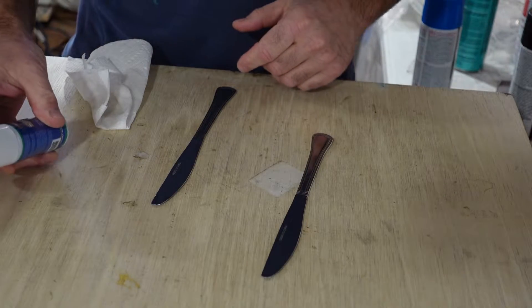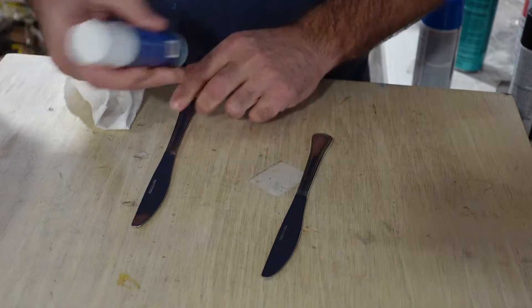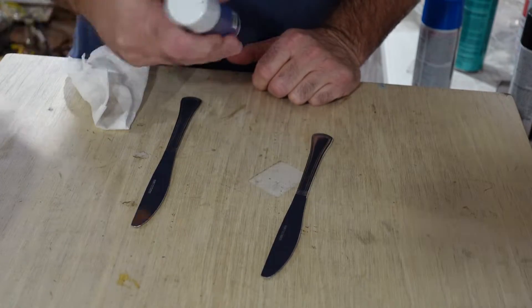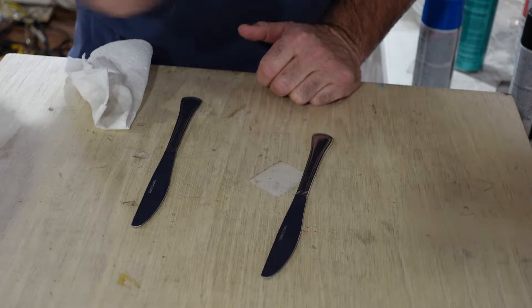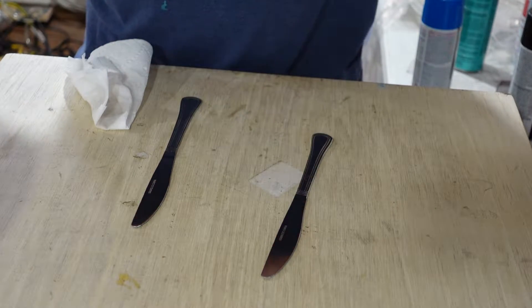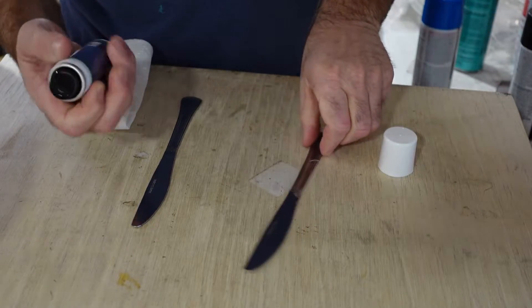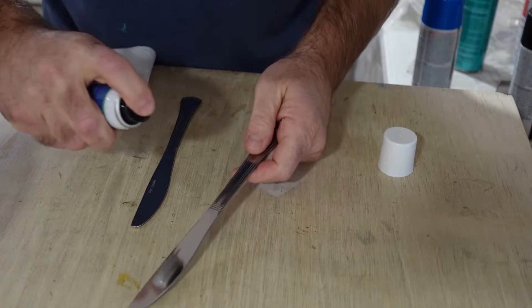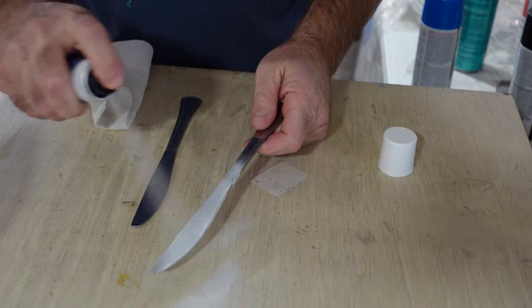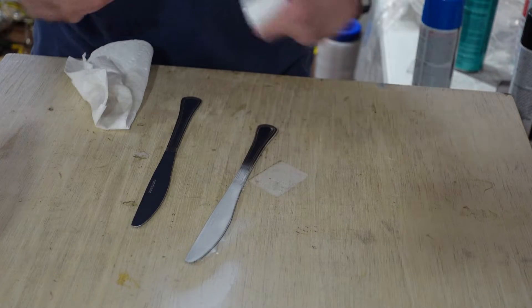Now the first thing we're going to use is this Brilliance. Shake that up. This stuff actually has to be dry before it goes into the laser. All right, so you spray that on there real well. Make sure you cover the whole thing. Okay, we're going to let that dry.